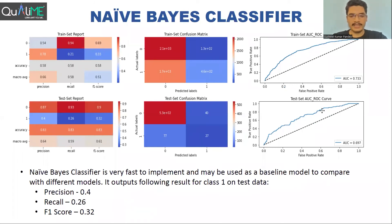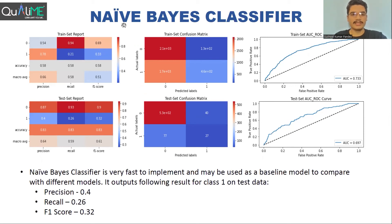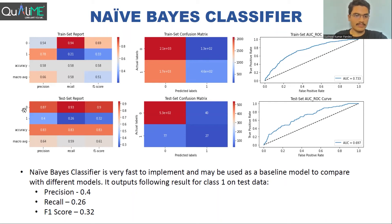We also experimented with the Naive Bayes classifier, which is often used as a baseline to compare other algorithms. On the test set for class one, the precision was 0.4, recall was 0.26, and F1 score was 0.32. This model was not performing particularly well.